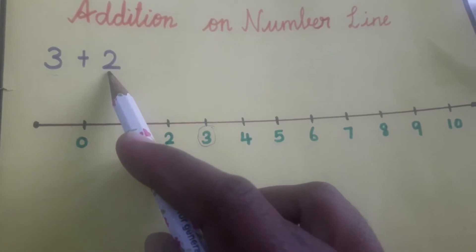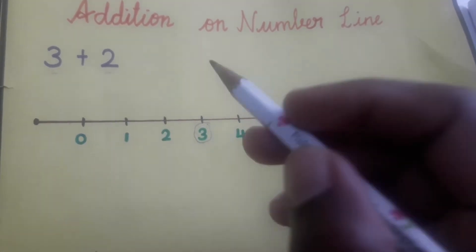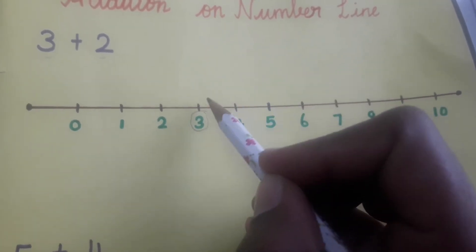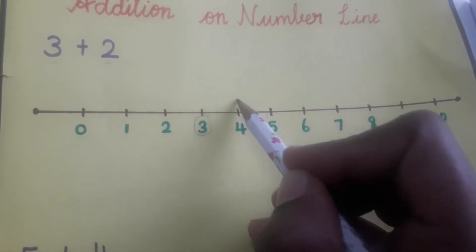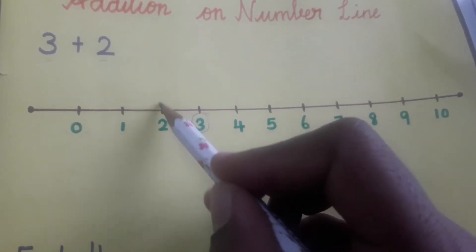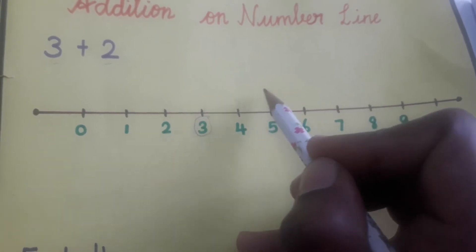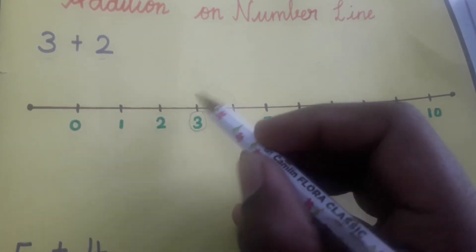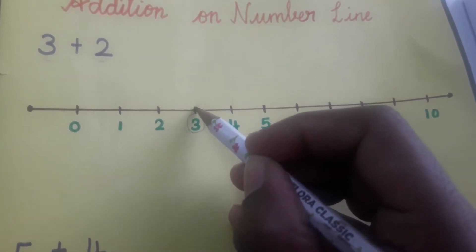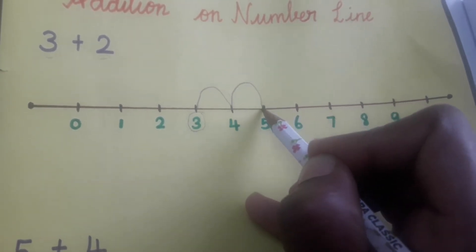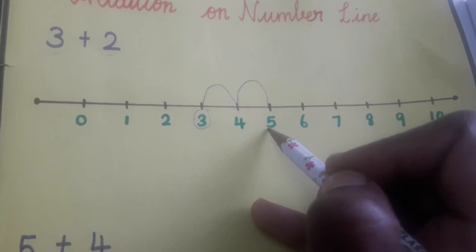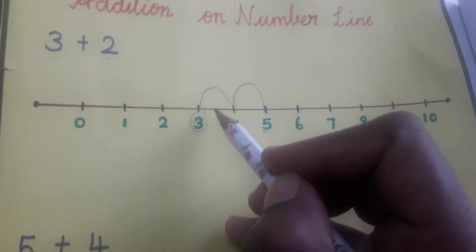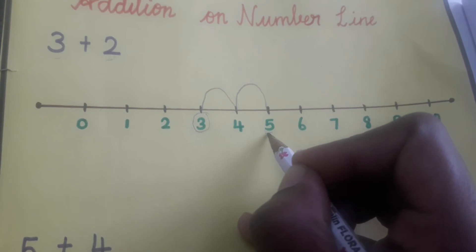Next, what number do we have to add with 3? It's 2! We are going to add number 2 with 3, so we have to jump 2 times after 3. Remember, you have to jump forward — not backward. So we jump 2 times from 3: 1, 2. Now what number have we reached? 5!